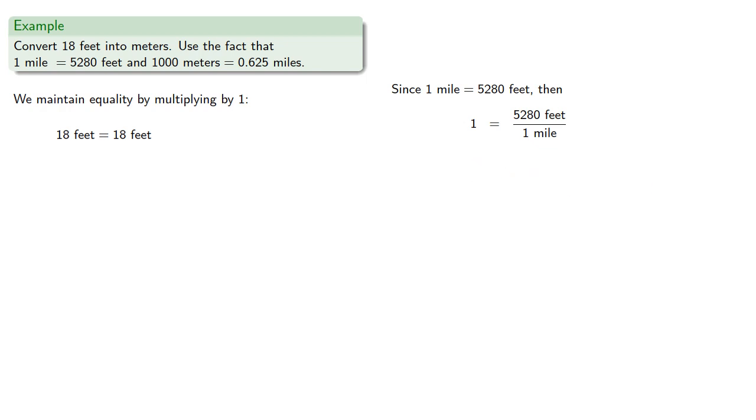Or we could also use the reciprocal. And here's the important thing: we choose the form of 1 we can use to eliminate feet. That means we want feet in the denominator, so we can then remove a common factor.